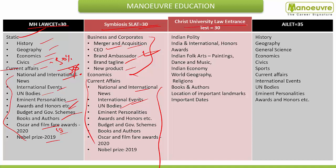For Christ University law entrance, there will be 30 questions and the nature of this paper will be a bit static-oriented. Here you can see the slabs: Indian politics questions will be asked, India and international honours and awards, Indian folk arts and painting, cultural-type questions on dance and music, Indian economy, world geography, religion, books and others, location of important landmarks, and important dates. So this paper will be more static-oriented. No doubt current affairs questions will also be asked, but the static part will be more covered here.